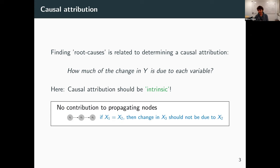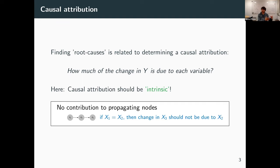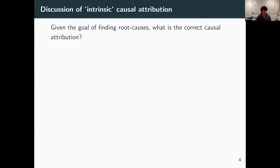The key contribution I want to highlight is that there is no contribution attributed to propagating nodes. If you have x1, x2, x3, and x2 is a deterministic copy of x1, you do not want to attribute any importance to x2 for the change — the entire change should be at x1. You need to separate this deterministic notion from the stochasticity coming through x1. This is essentially the key property.